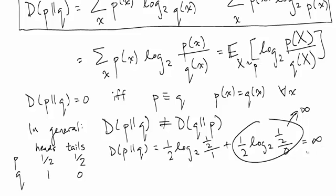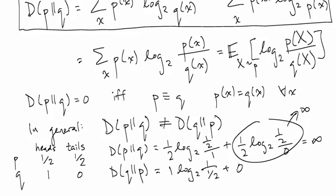What happened was that we're sampling from distribution p where it's possible to get tails, but distribution q has no way of storing tails — so we get hit by a penalty of infinity bits. In contrast, the divergence between q and p is: 1 · log₂(1 / (1/2)) plus 0 · log₂(0 / (1/2)). Since 0 log 0 we take to be 0, the second term vanishes, and we're left with 1 · log₂(2) = 1 bit.